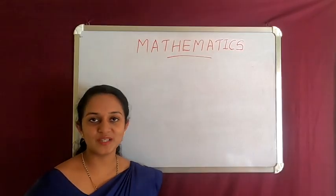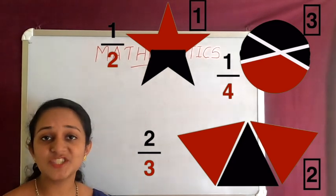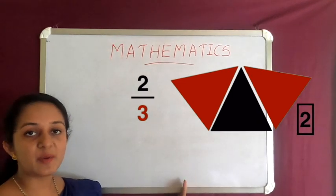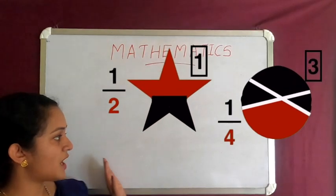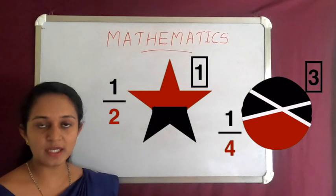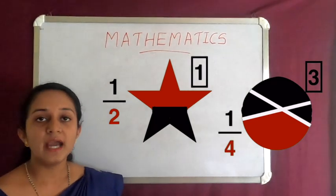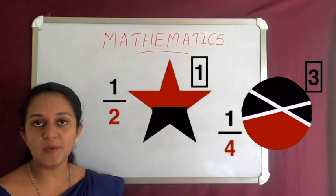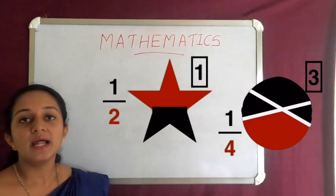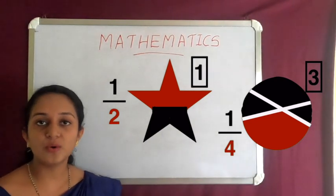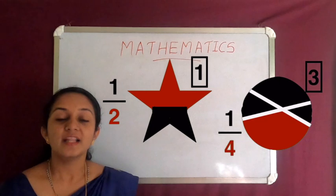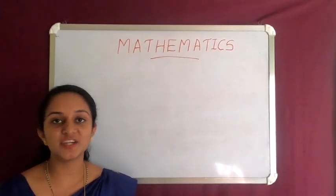Let's take a small quiz. Can you tell me whether the shaded portion corresponds to the fraction displayed? In question two, the shaded region represents the fraction correctly. In question one and three, it does not. In question one, the shape is not divided into equal parts — that's why the shaded region does not correspond to the displayed fraction. In question three, it is not divided into four equal parts, so the fraction does not correspond to the shaded region.